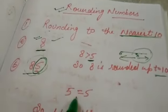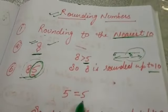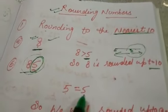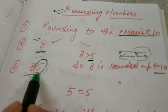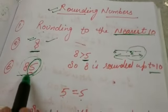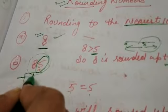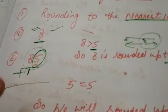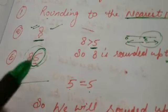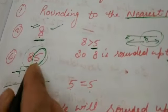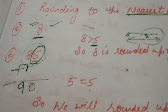So 5 is not greater than but it is equal to 5. That means we will go 5 steps ahead. So we will add 1 in the ten's place. Here will be 9 and this place we will write 0. So the answer will be 90.